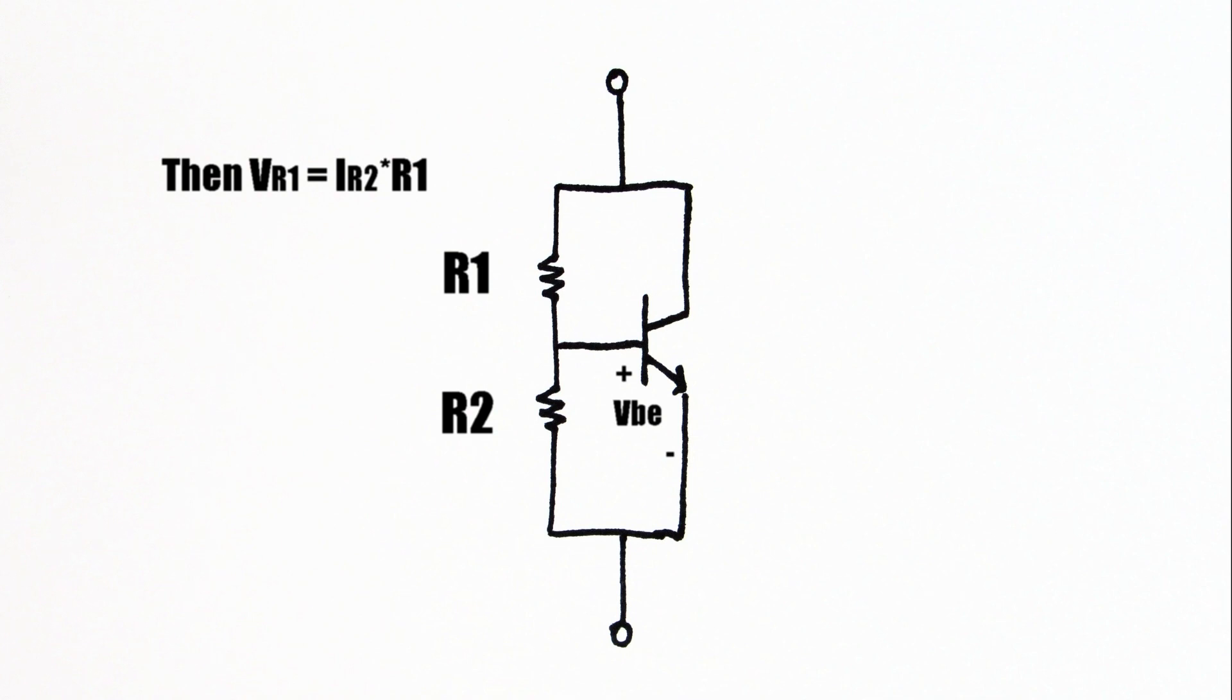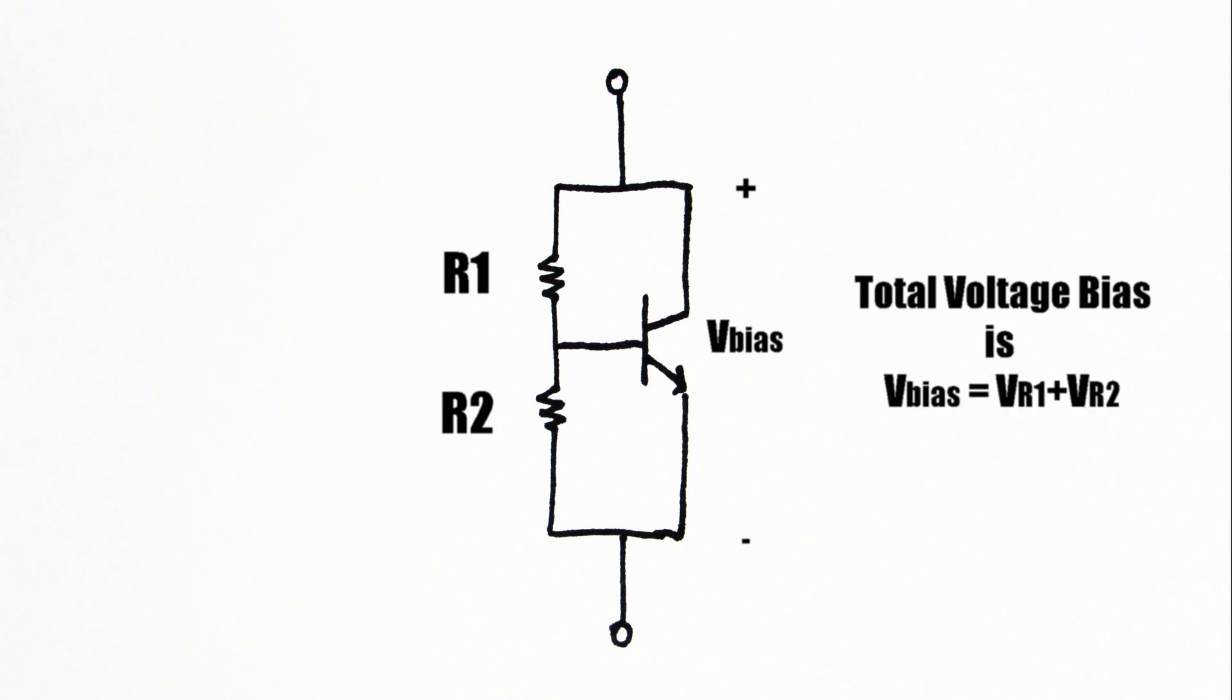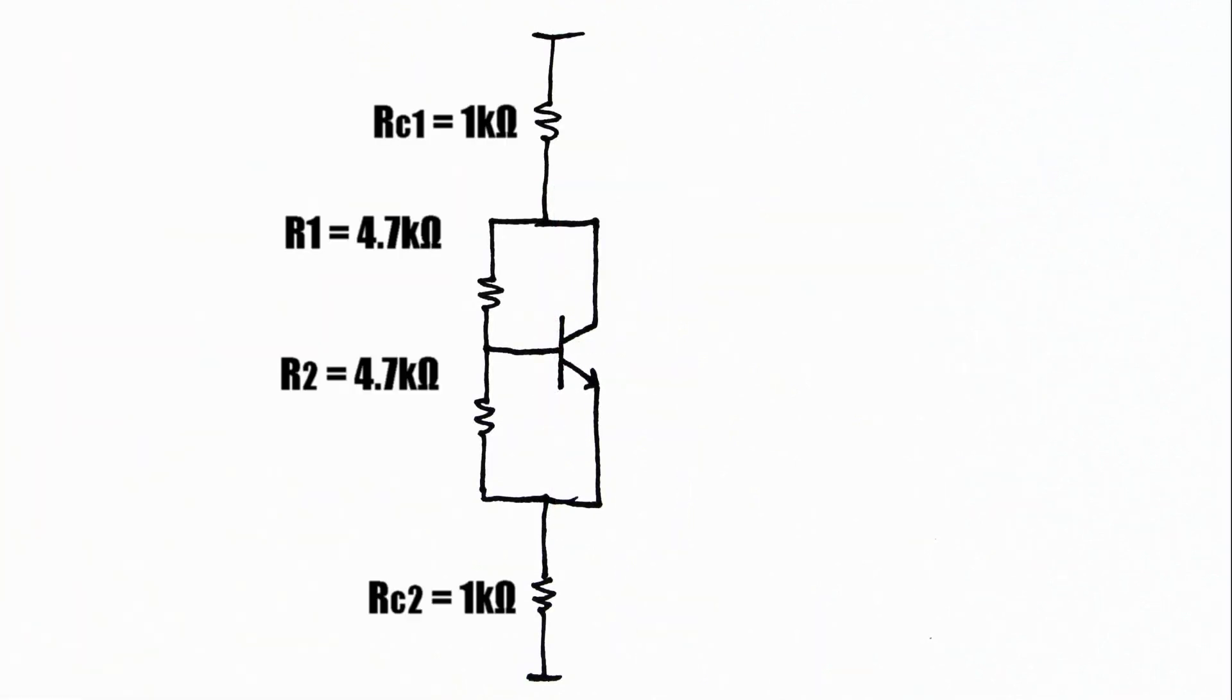Now that we know the current going through R1 and R2, we know the total voltage bias. The total voltage bias is the sum of the voltages across R1 and R2. Here's the configuration we'll use in the class AB amplifier.